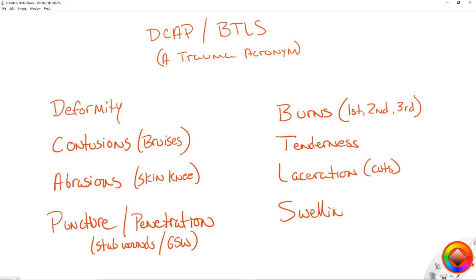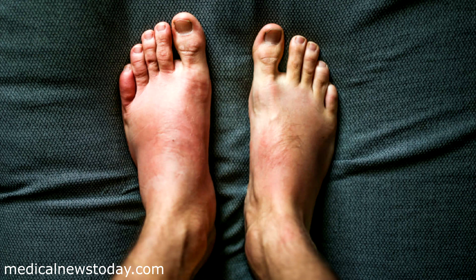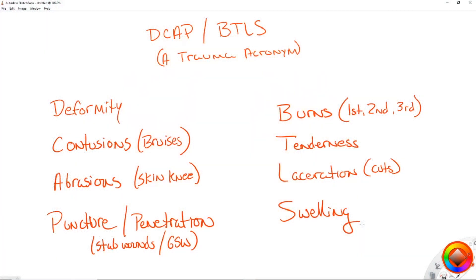And lastly, S is for swelling. When we're looking for swelling, we're looking for that fluid buildup around an injury site — things are not the size they should be, they're a little bigger because fluid has traveled there to help with the injury. So guys, that's DCAP-BTLS.